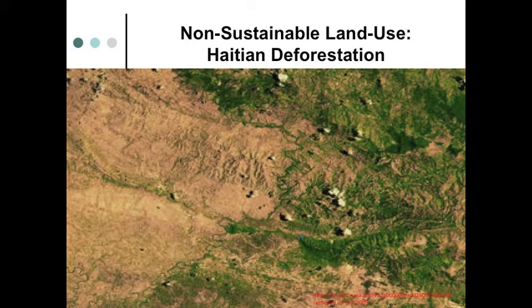This slide illustrates the difference between sustainable and non-sustainable land use. On the left-hand side we see the country of Haiti, and on the right-hand side we see the Dominican Republic. In Haiti, land use regulations have allowed people to cut down all of the trees, and therefore there are no trees left to gather for firewood or other uses. The Dominican Republic, on the right, has a sustainable land use policy.